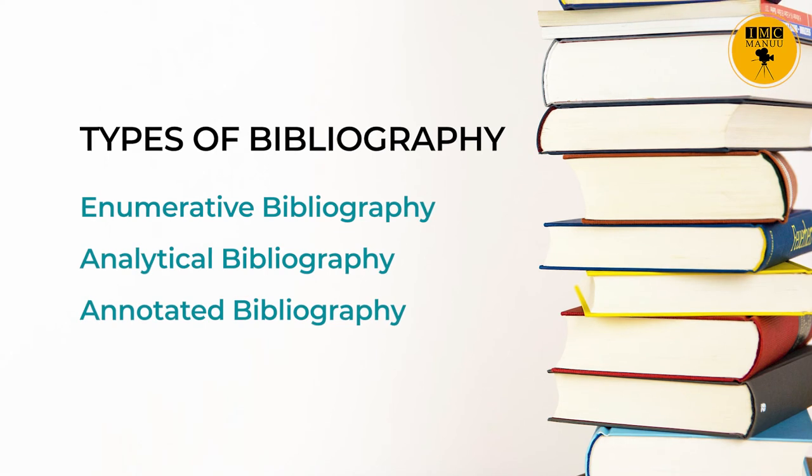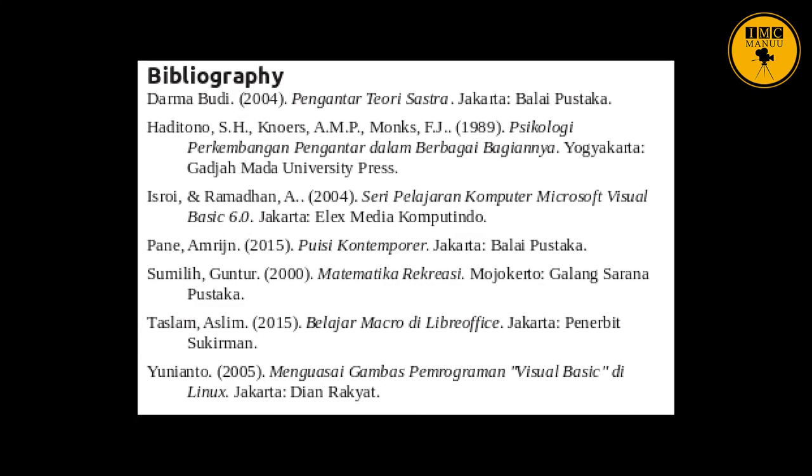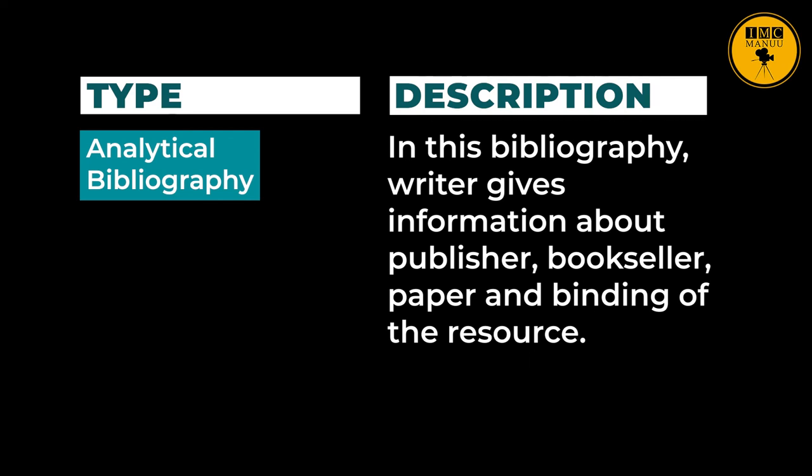The types of bibliography are enumerative bibliography, analytical bibliography, and annotated bibliography. Enumerative bibliography lists references according to a particular pattern or arrangement — for example, APA style (American Psychological Association style). Enumerative bibliography follows a particular pattern of writing bibliography, and there are many such patterns. The second type is analytical bibliography, where the writer gives information about the publisher, bookseller, paper, and binding of the resource, providing more detailed information.